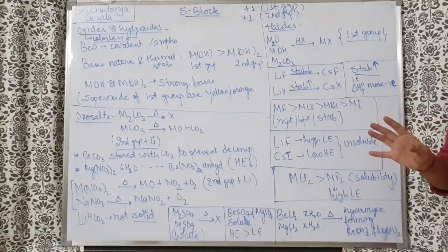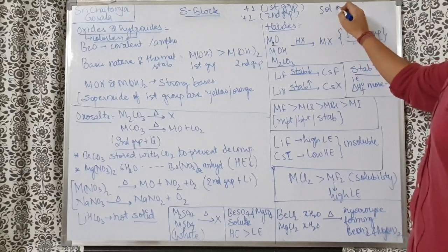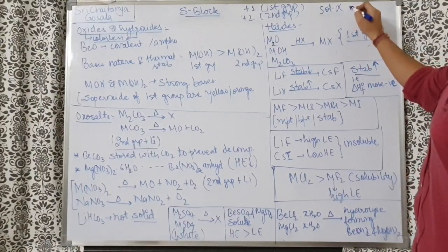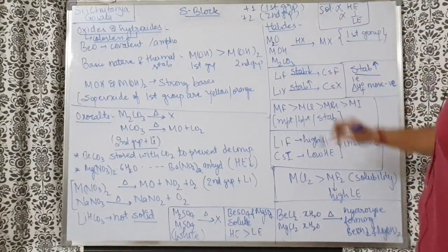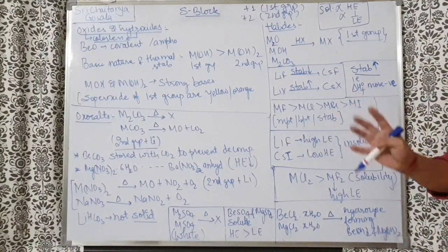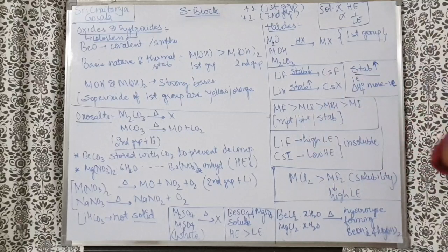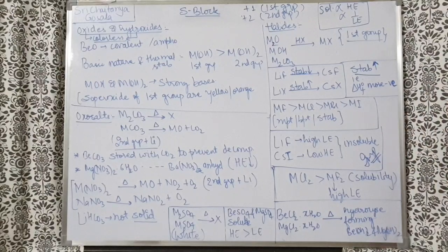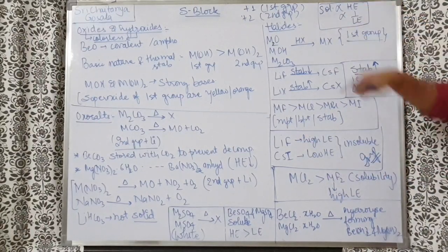LiF and CsI are both insoluble in water. Solubility depends on hydration enthalpy and lattice enthalpy — directly proportional to hydration enthalpy and inversely proportional to lattice enthalpy. LiF is insoluble due to high lattice enthalpy, and CsI is insoluble due to low hydration enthalpy. These are very important reasons and the answer is extremely commonly tested.